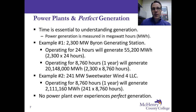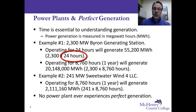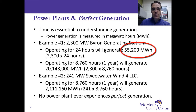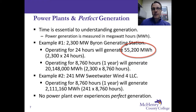To calculate generation, it's a simple multiplication problem — nothing more complex than that. Using the Byron Generating Station as an example: we have its capacity of 2,300 megawatts, and if we run that plant at 100% for 24 hours, we simply multiply its capacity by 24 hours and we get an electric output of 55,200 megawatt hours. Notice that hours is included — we can't talk about electricity generation unless a unit of time is included.